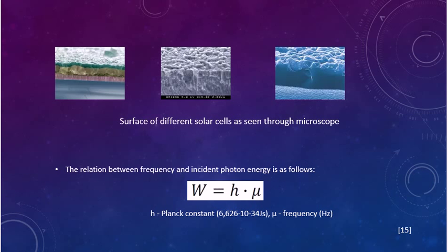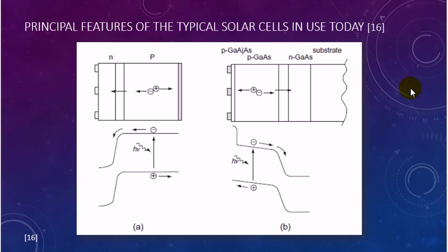Principle features of the typical solar cell in use today. This is the structure of crystalline silicon solar cell. The bulk of the cell is formed by a thick P-type base in which most of the incident light is absorbed and most power is generated. After light absorption, the minority carriers, which are electrons, diffuse to the junction where they are swept across by the strong built-in electric field. The electrical power is collected by metal contacts to the front and back of the cell.